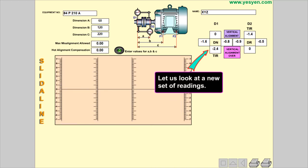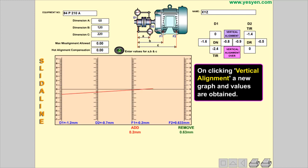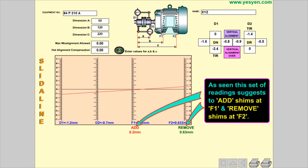Let us look at a new set of readings. On clicking Vertical alignment, a new graph and values are obtained. As seen, this set of readings suggests to add shims at F1 and remove shims at F2.